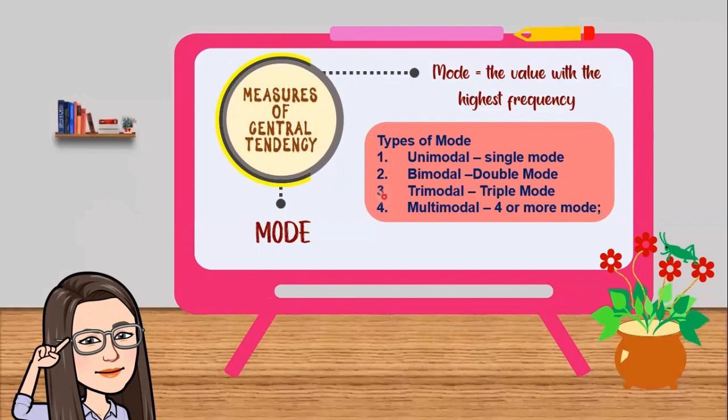Number 3, trimodal, triple mode, meaning there are 3 modes that can be seen in a set of data. 4, multimodal, if there are 4 or more modes that can be seen in a set of data.